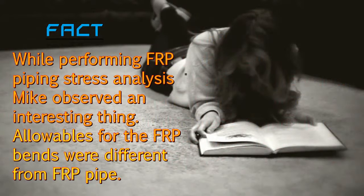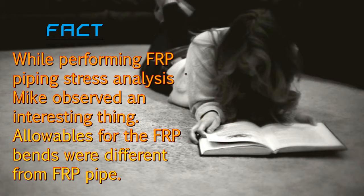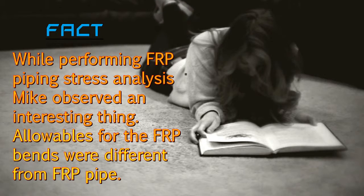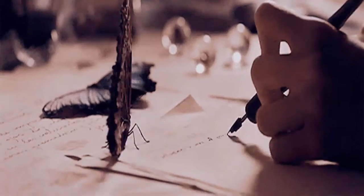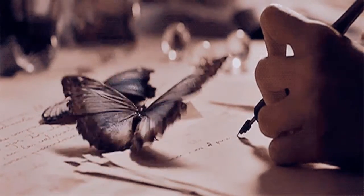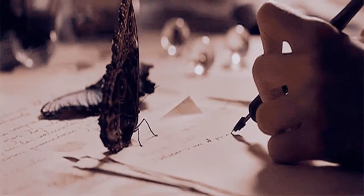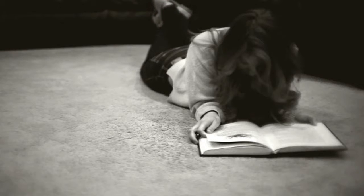Further, let's look into a case: while performing FRP piping stress analysis, Mike observed an interesting thing — the allowables for the FRP bends were different from the FRP pipe. To know more about this case, kindly click on the link below or continue watching this channel, which explains some of the basics of oil and gas piping and piping stress analysis.